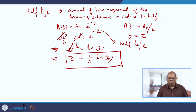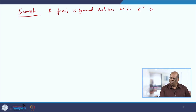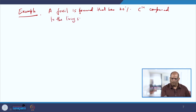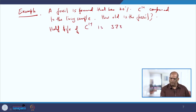Let us take an example of how to calculate the age of a fossil. A fossil is found that has 20% of its C-14 compared to a living sample. How old is the fossil? It is given that the half-life of carbon-14 is 5730 years.